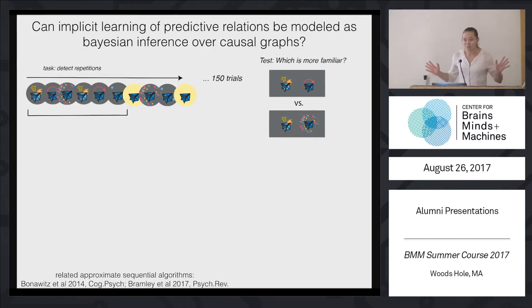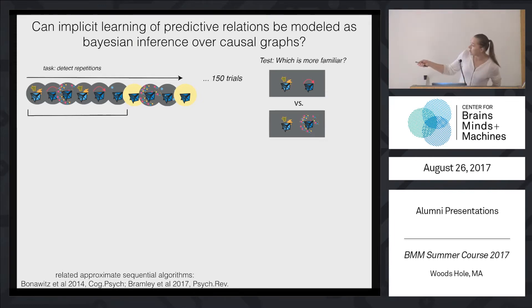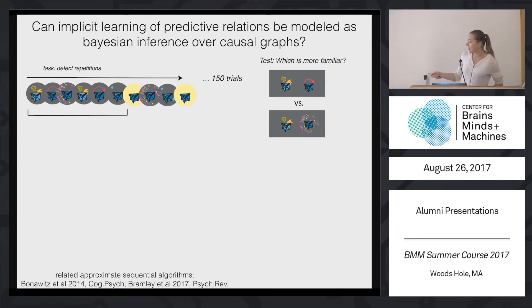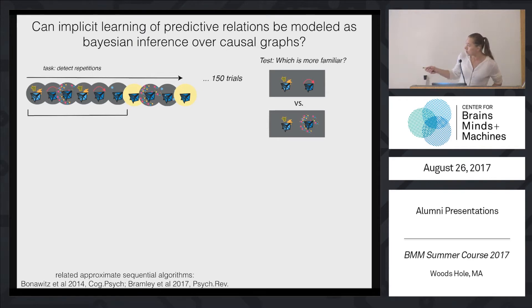I've been doing some modeling, specifically of a really interesting learning phenomenon called statistical learning. Imagine you are faced with a very long stream of sequences of events that happen continuously in time. You're asked to do something fairly orthogonal, like detect one-back repetitions. You're not actually aware of any structure in it, but there is structure.